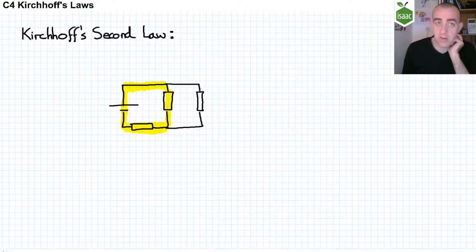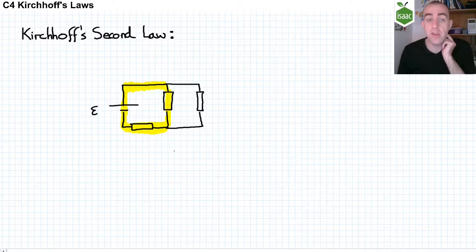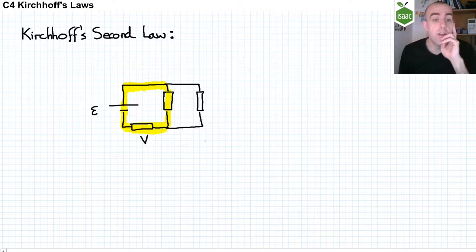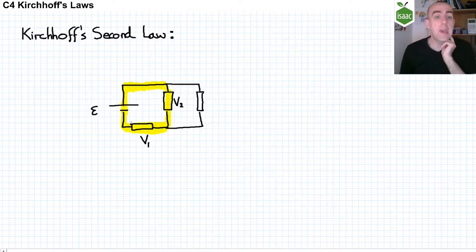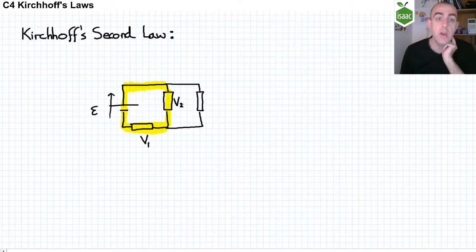Let's call the voltage across the resistors V1 and V2 on this loop. Then whatever we gain as the current passes through the first component, which is this power supply, we lose when it passes through the other two. Or epsilon equals V1 plus V2.